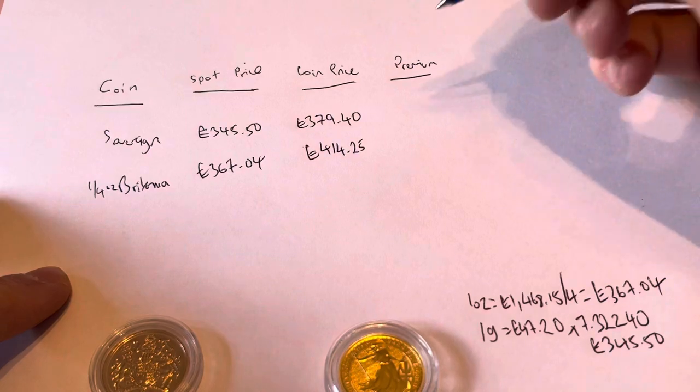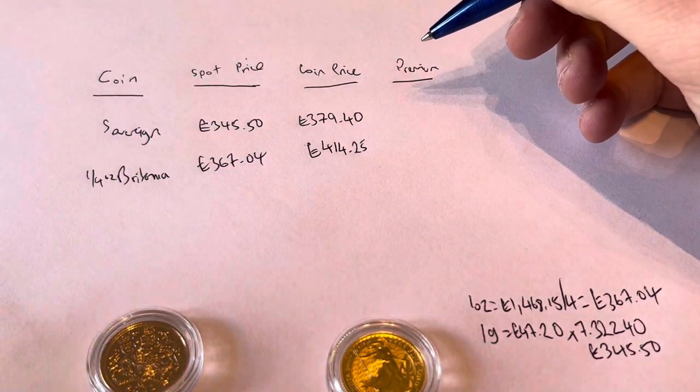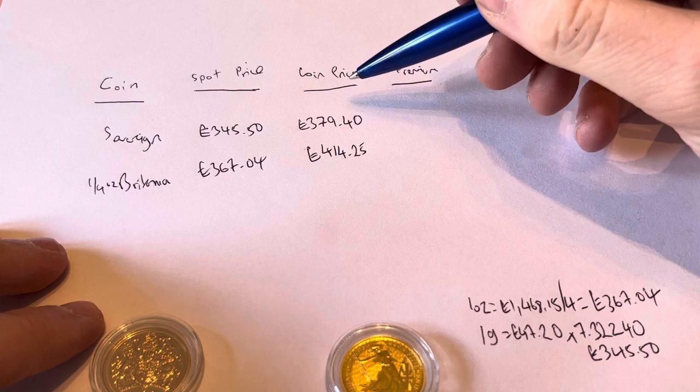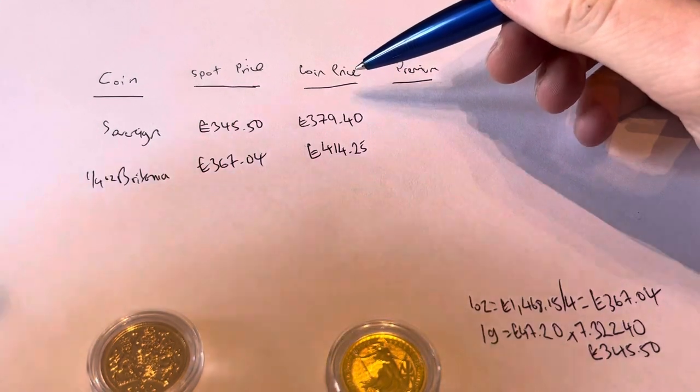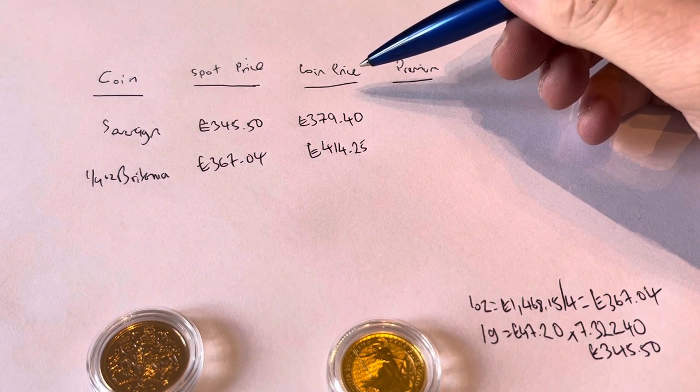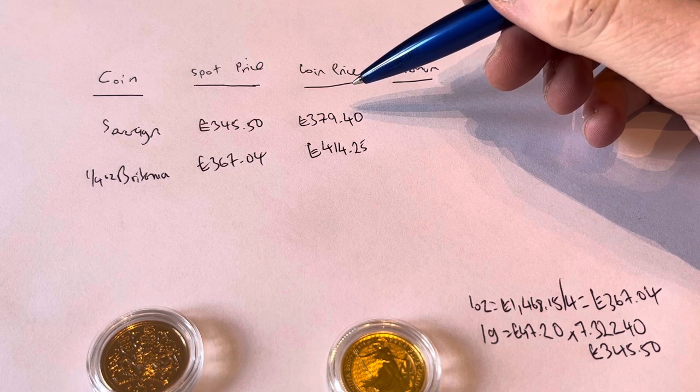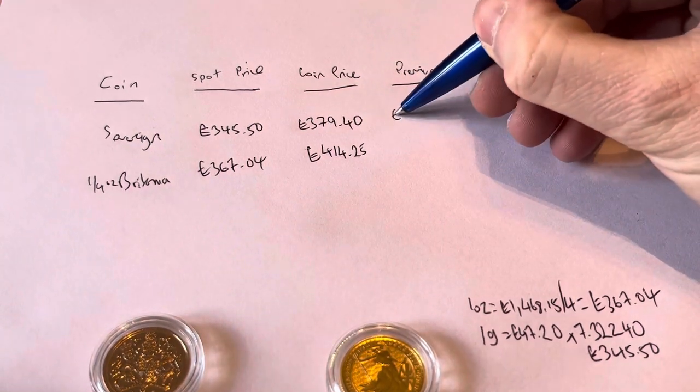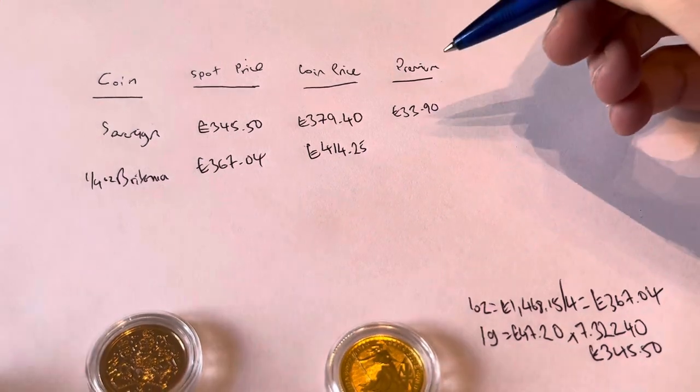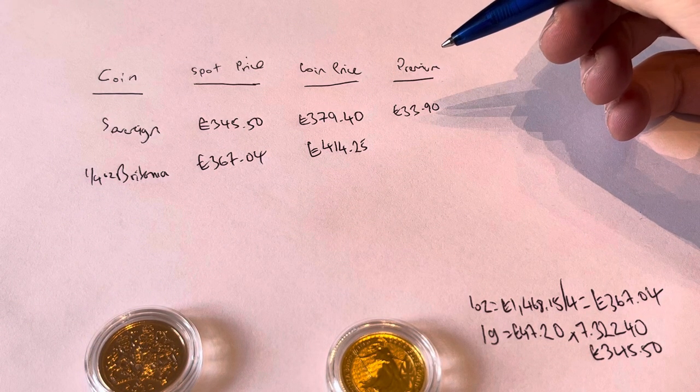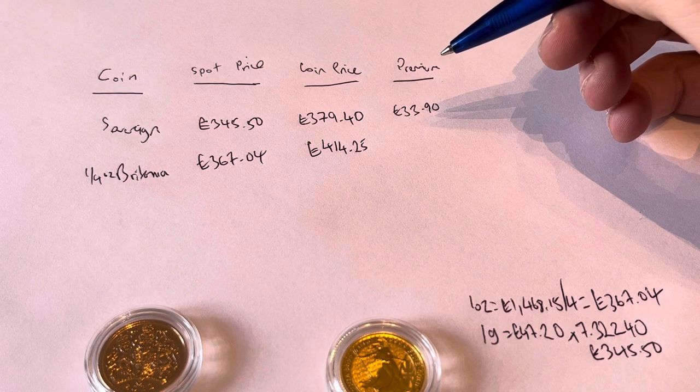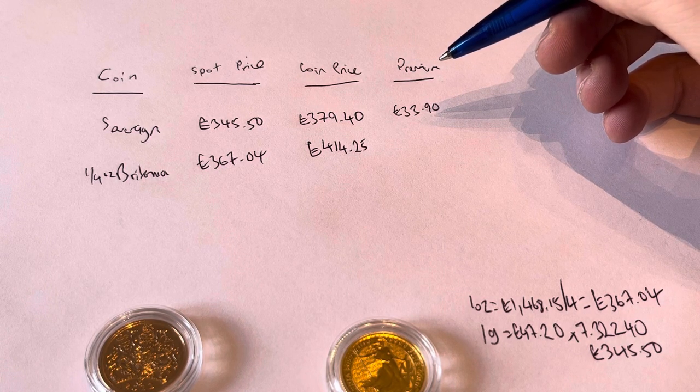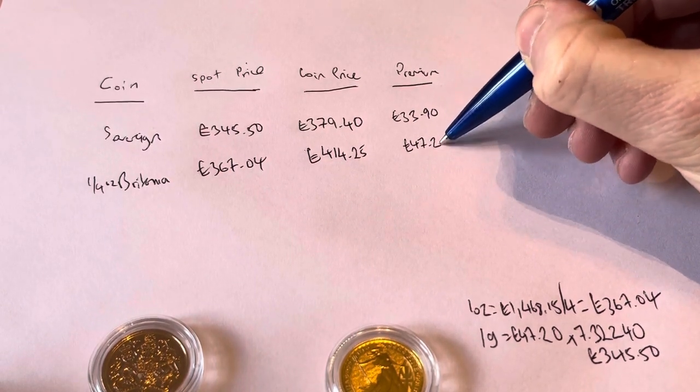So the final column is, I'm going to work out the premium in pounds and pence. So in order to do that, I'll take away the spot price from the actual coin price that it was bought for. So let's just have a quick sense check of this. For this one, it's going to be £379.40 minus £345.50, which gives us £33.90. And then on the Britannia, we'll do £414.25 minus £367.04. And that gives us £47.21.